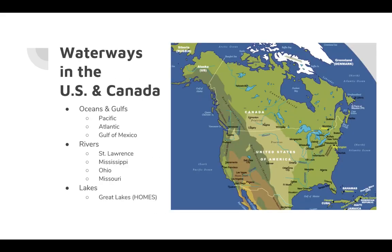Let's take a look at a physical map of the United States and Canada. Three main waterways are oceans and gulfs, rivers, and lakes. Our major bodies of water are the Pacific Ocean, the Atlantic Ocean, and the Gulf of Mexico, which allows people to trade goods with other countries. You can see there are some major cities along each of the coasts.